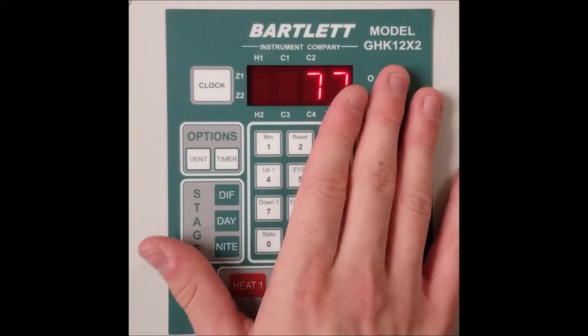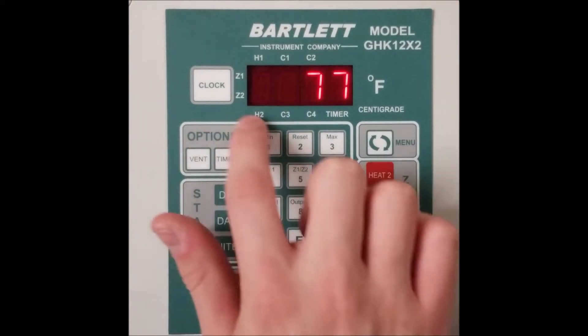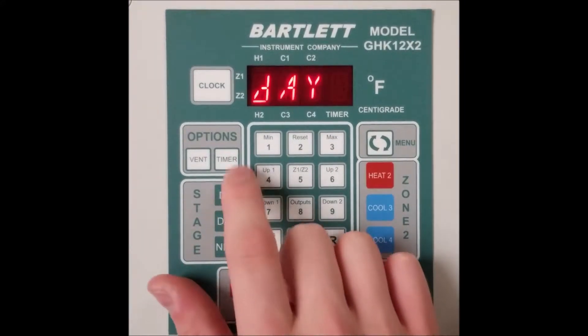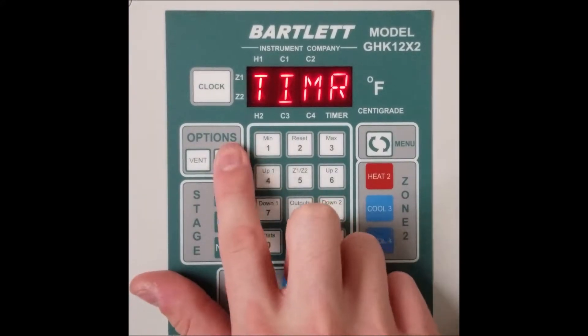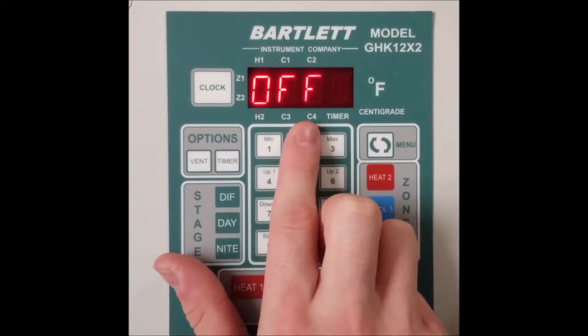First, locate the button labeled timer on the controller. We'll have to press it repeatedly to cycle between three options: either timer, mist, or off.